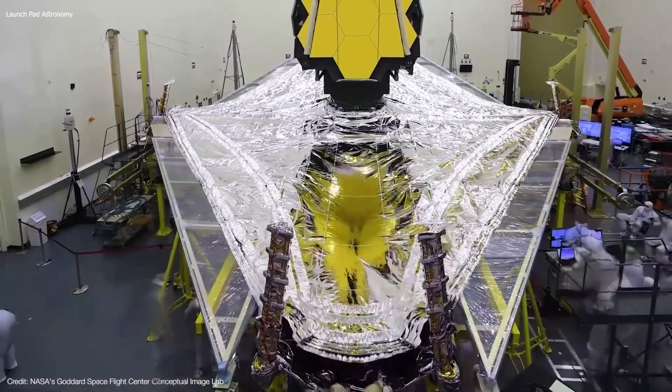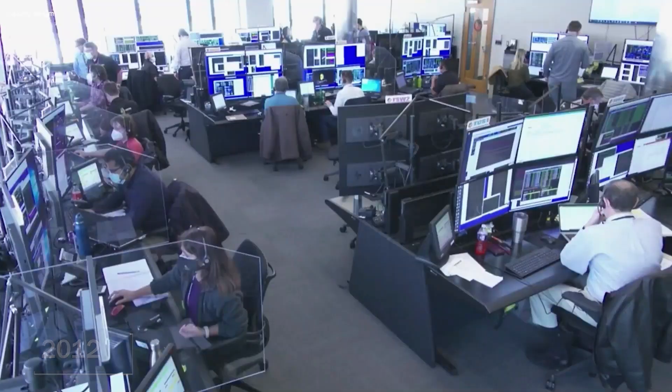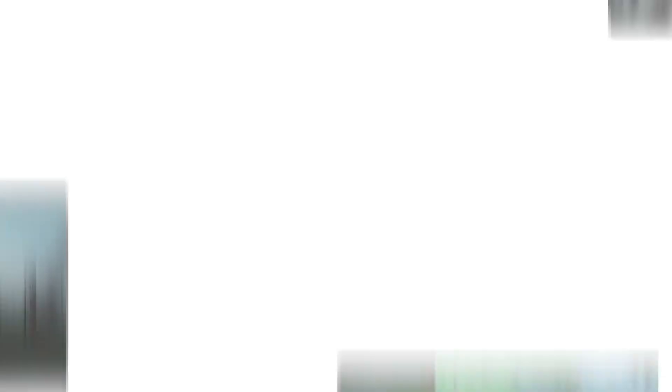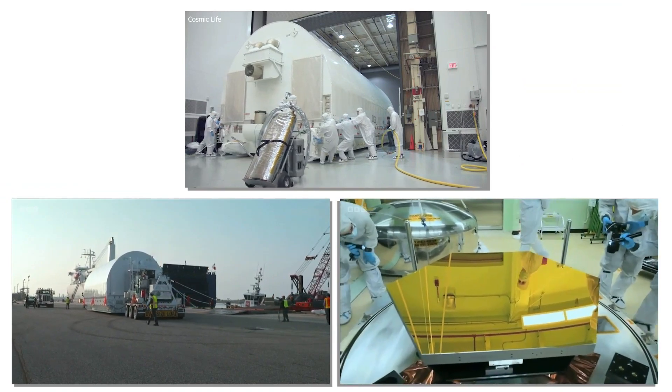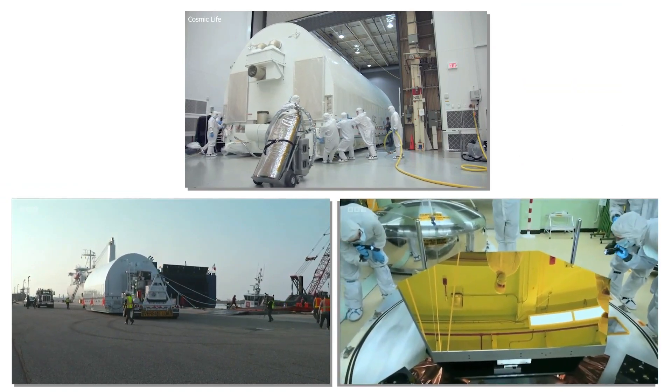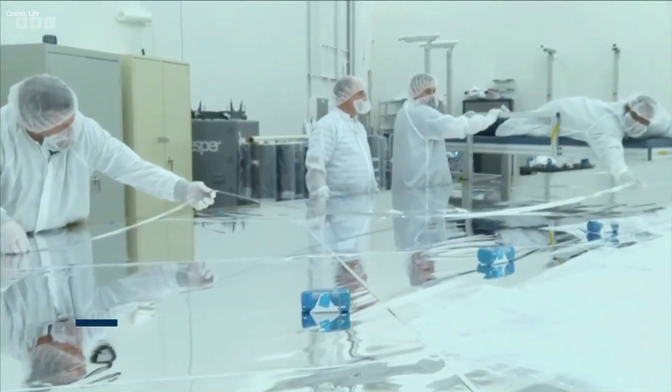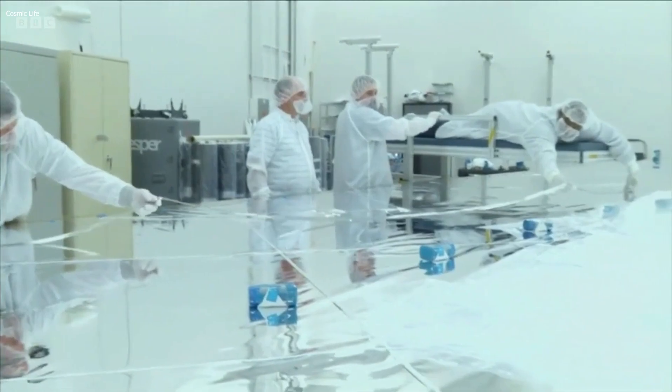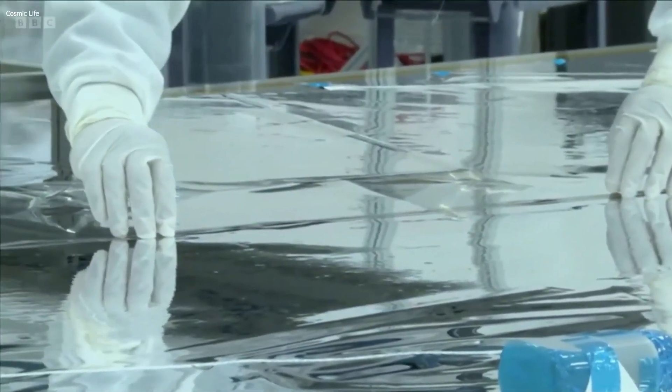The construction for the James Webb Space Telescope as a whole began in 2012 and continued through 2013, with individual pieces of the telescope being constructed at a variety of locations across the globe. In 2013, construction began on Webb's sunshield layers, which protect the telescope from excess heat and allow it to function effectively in space.